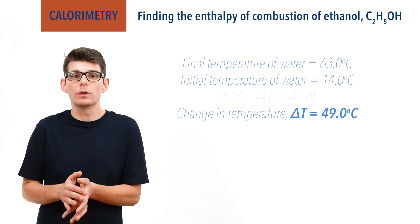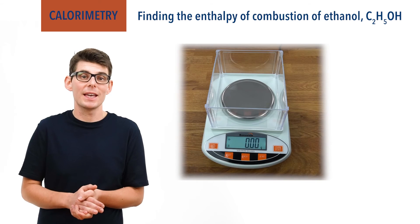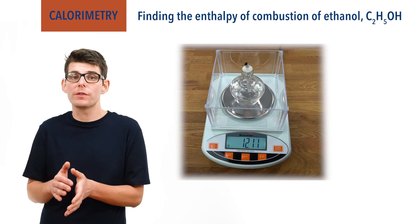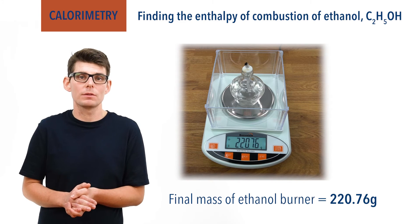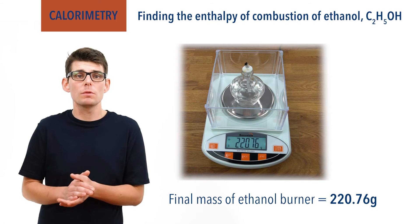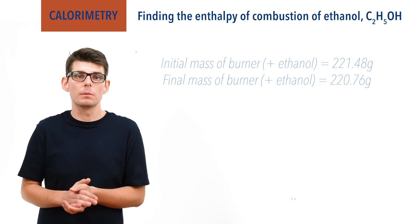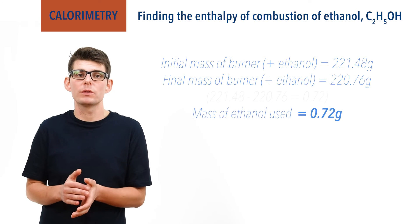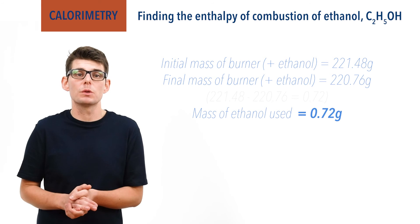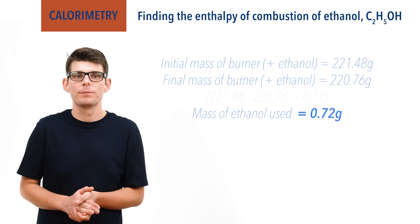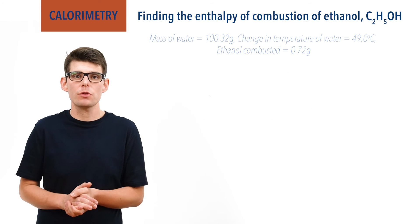To find the mass of ethanol used to heat the water, we need to record the mass of the ethanol burner again immediately after the flame is extinguished. The reading is 220.76 grams. The initial mass was 221.48 grams, giving a mass decrease of 0.72 grams. We can assume that 0.72 grams of ethanol combusted. We now have all the information we need to calculate the enthalpy of combustion.